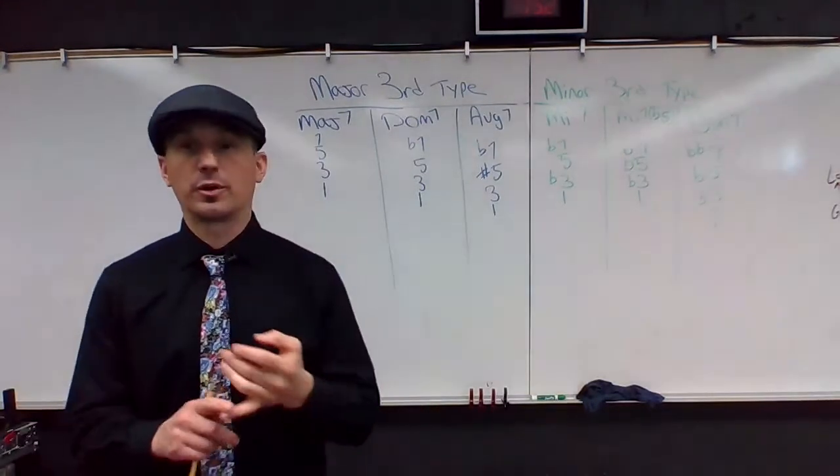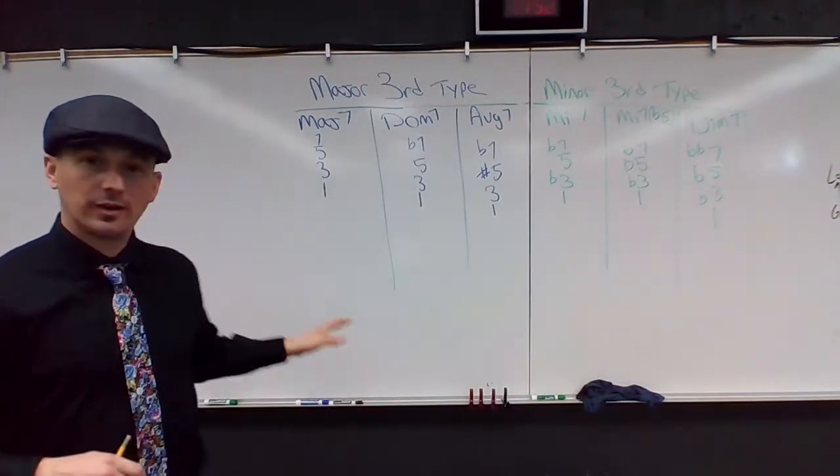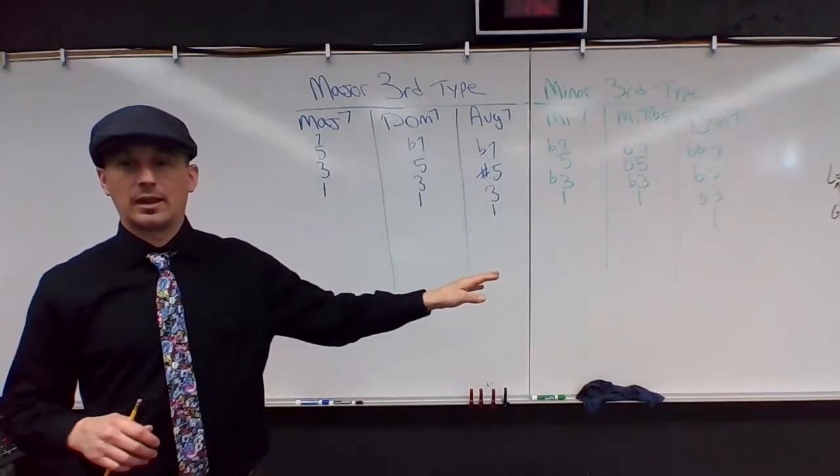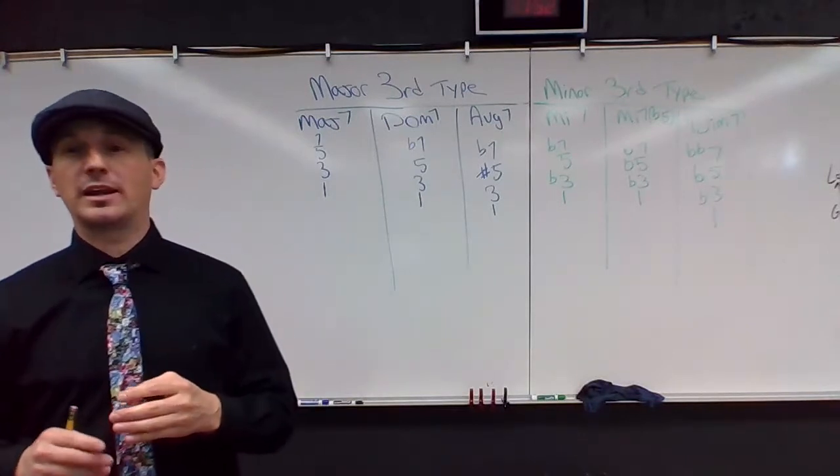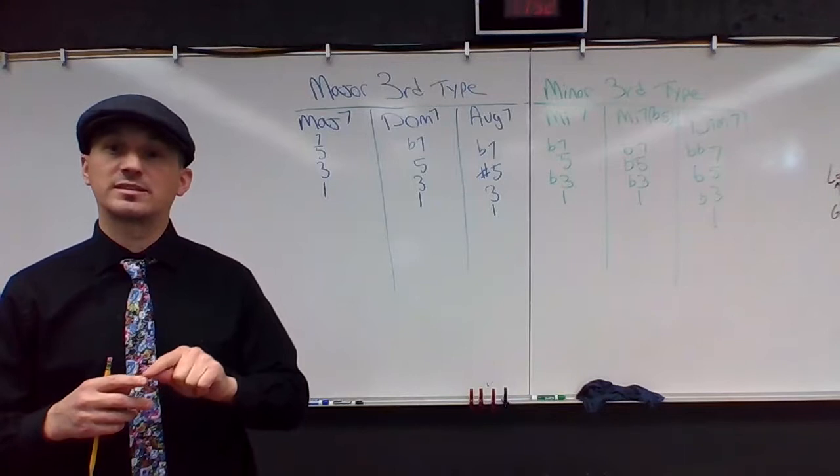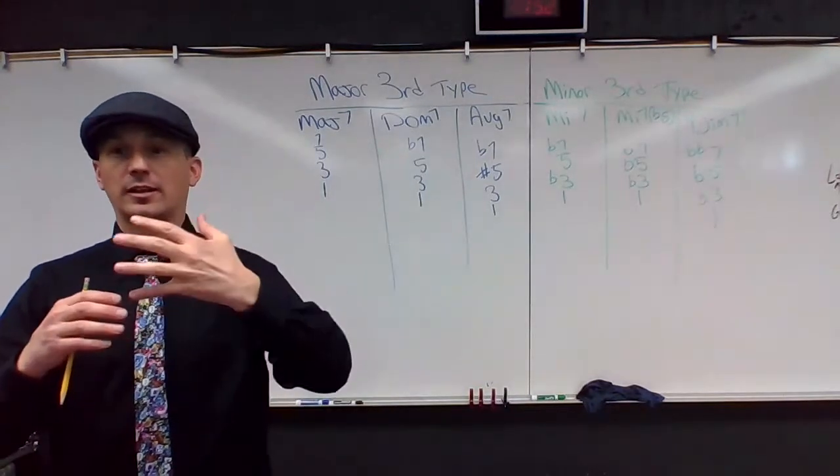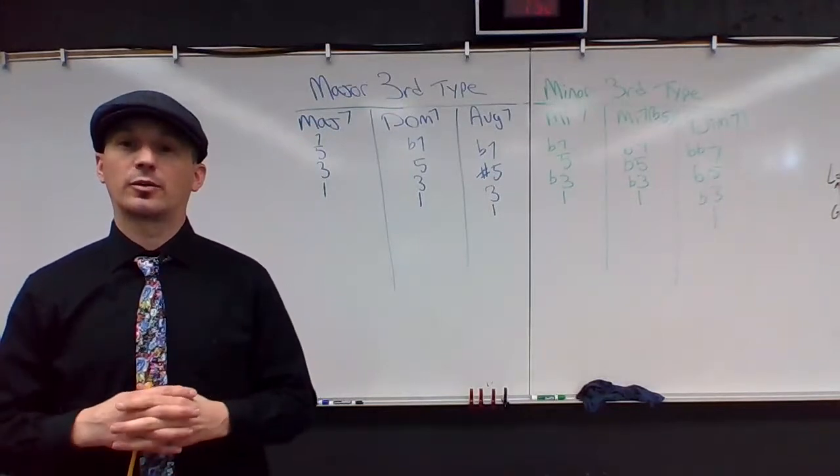Now we're going to talk about seventh chords. So if you recall, when we wrote out the triads, we would write out a major scale, and we would take one, three, and five. So using that tertian harmony, where we'd go from one, then skip over two, take three, skip over four, take five, stack those up, one, three, and five, created a chord.